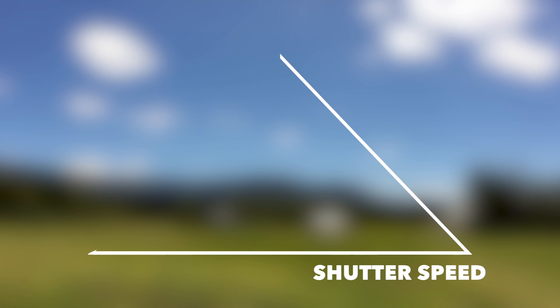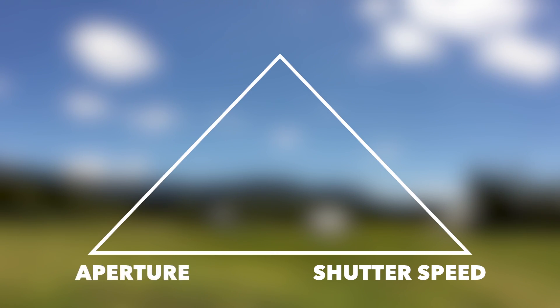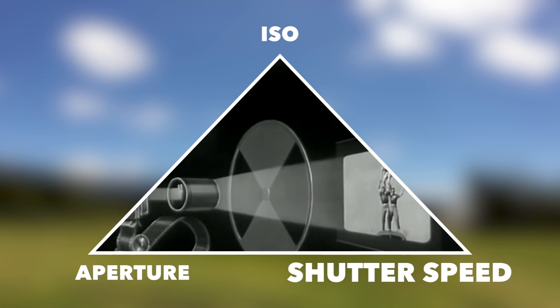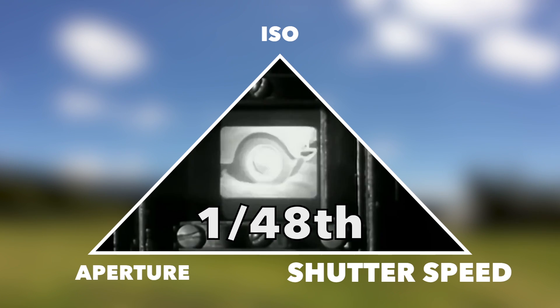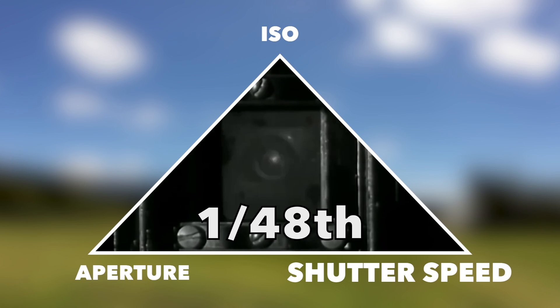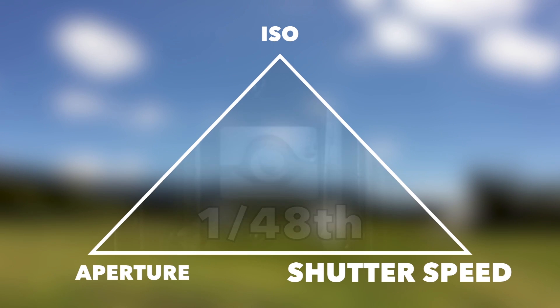Now let's get back to shutter speed and why it matters. For DSLR and video cameras, the shutter speed makes up one part of what's called the exposure triangle along with aperture and ISO. The shutter speed determines how long each frame of your video is exposed for and is measured in fractions of a second, for example 1/48th of a second, and you can use the shutter speed to control the motion blur or lack thereof in your shot.